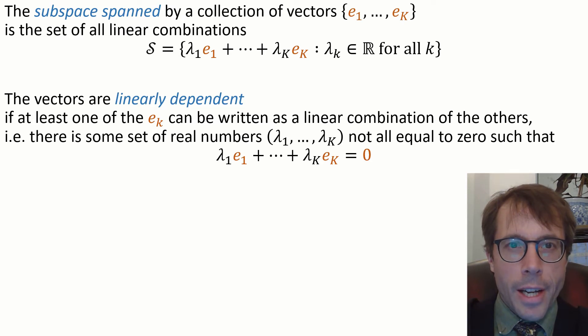In linear algebra we say that a collection of vectors e1 up to ek is linearly dependent if there's at least one of them that can be written as a linear combination of the others. Or another way to write this is if there's some set of coefficients lambda 1 up to lambda k not all equal to zero such that the weighted sum lambda 1 e1 plus dot dot dot plus lambda k ek is equal to zero.